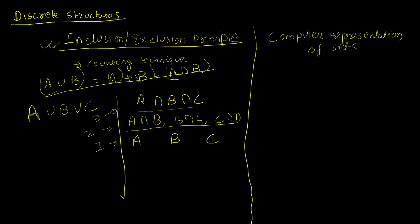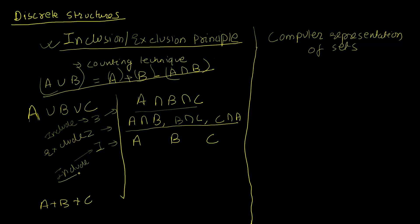The inclusion-exclusion principle tells us: start from the first layer and include everything, go to the second layer and exclude all of that, go to the third layer and include again, then exclude for the fourth, alternating. This works for any number of sets. So 'include' means to add and 'exclude' means to subtract.